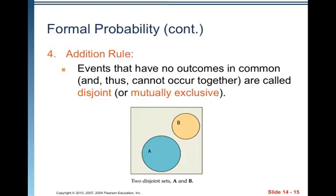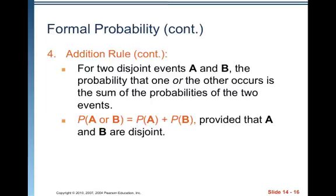The addition rule: events that have no outcomes in common and thus cannot occur together are called disjoint or mutually exclusive — you'll hear both terms used frequently, and they mean the same thing. In a Venn diagram, A and B are disjoint because there's no overlap; they are mutually exclusive. For example, rolling a single fair die, it is impossible to get an outcome that is both even and odd. For two disjoint events A and B, the probability that one or the other occurs is the sum of their probabilities: P(A or B) = P(A) + P(B), provided A and B are disjoint.